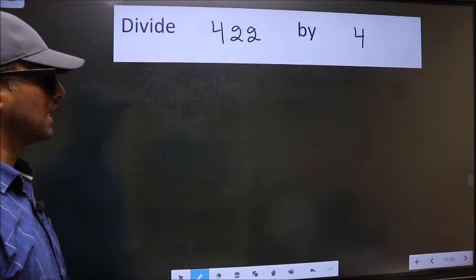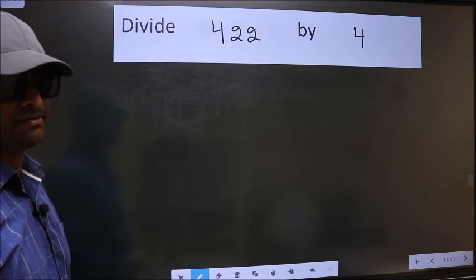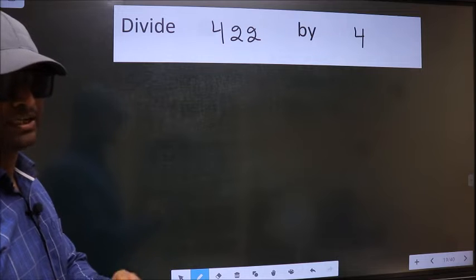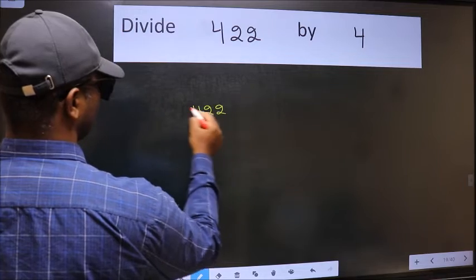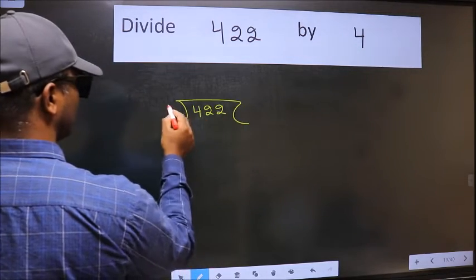Divide 4.22 by 4. To do this division, we should frame it in this way: 4.22 here and 4 here.